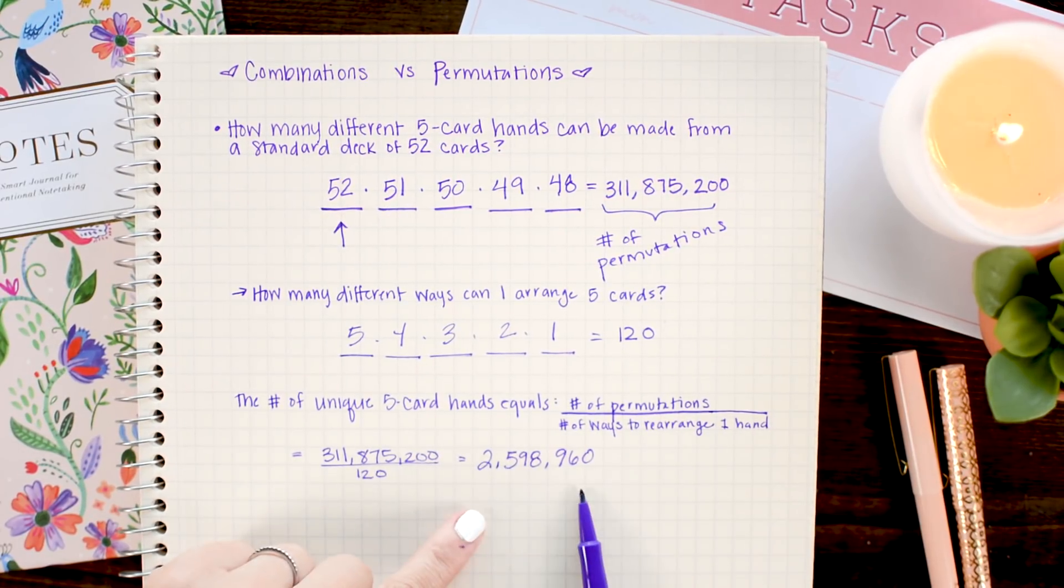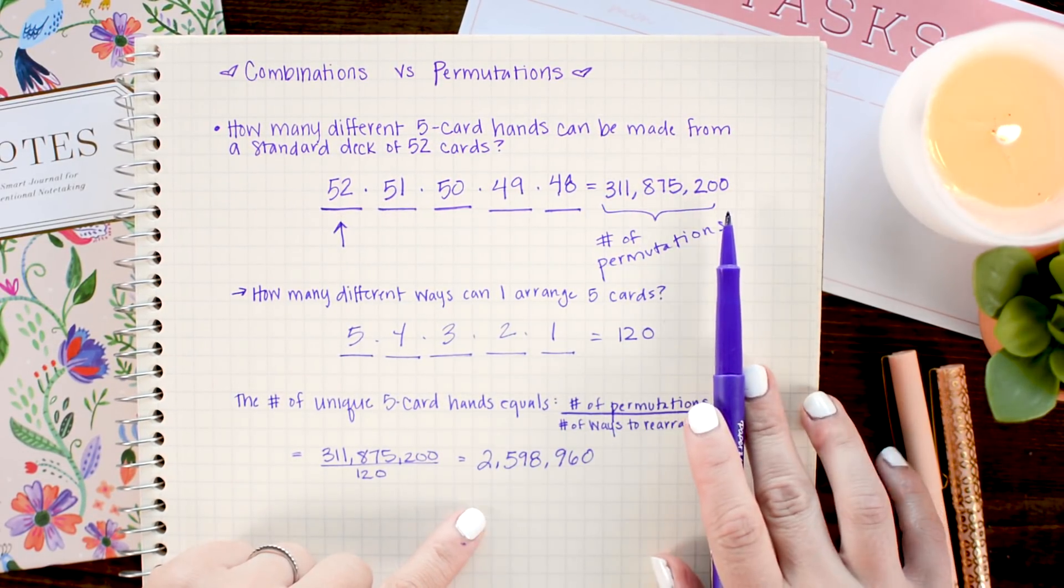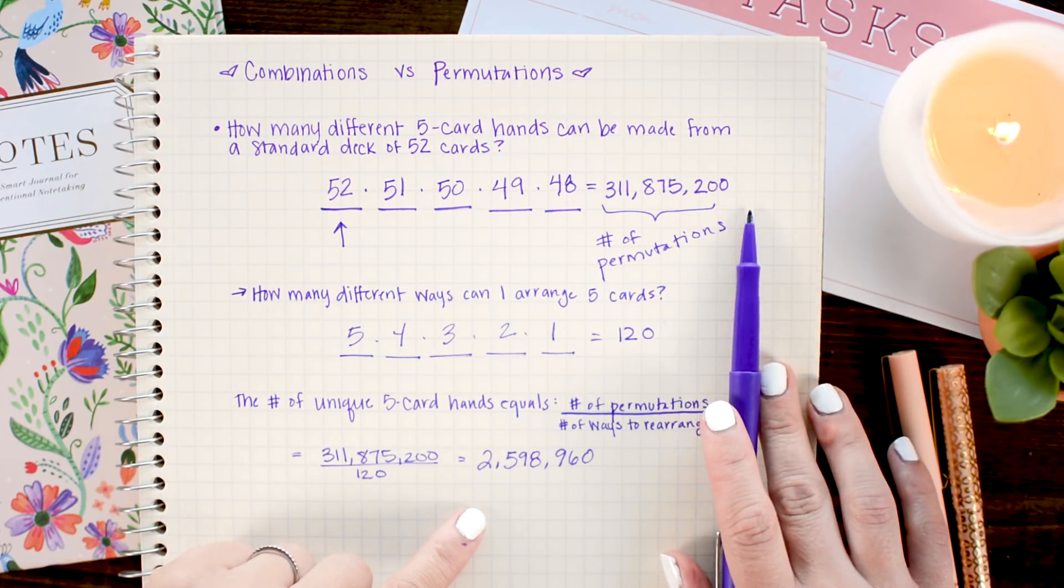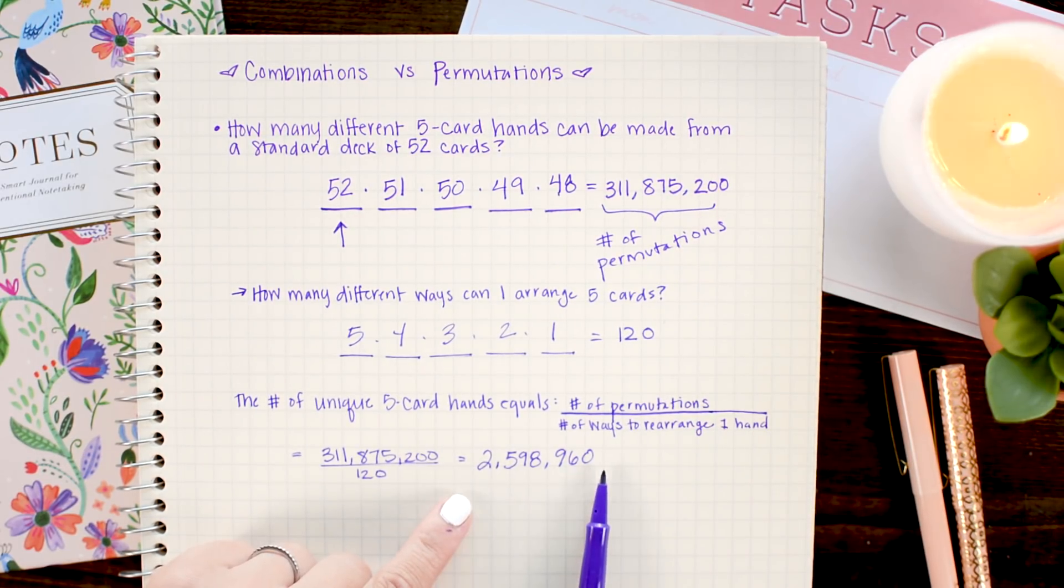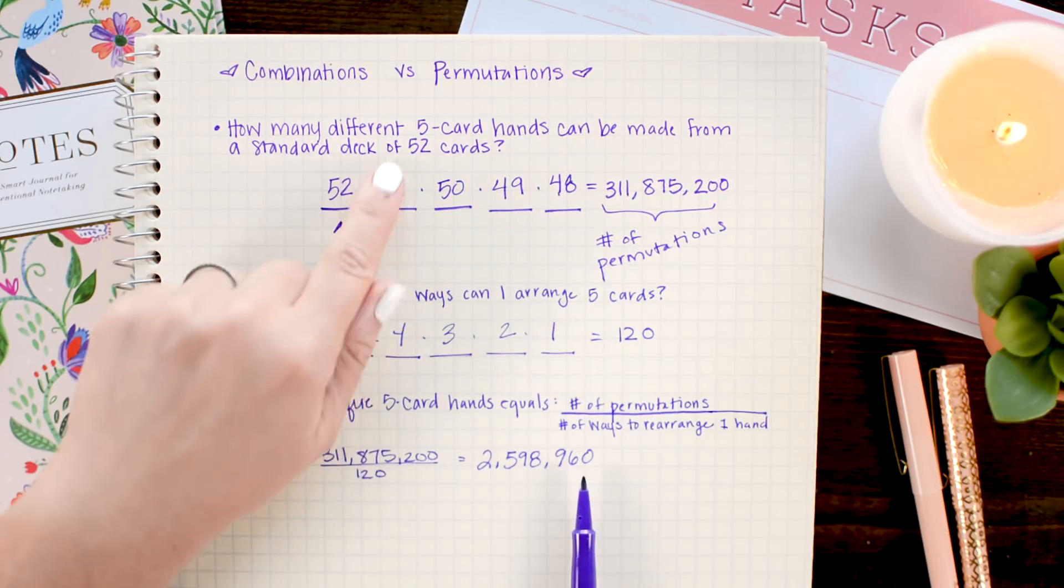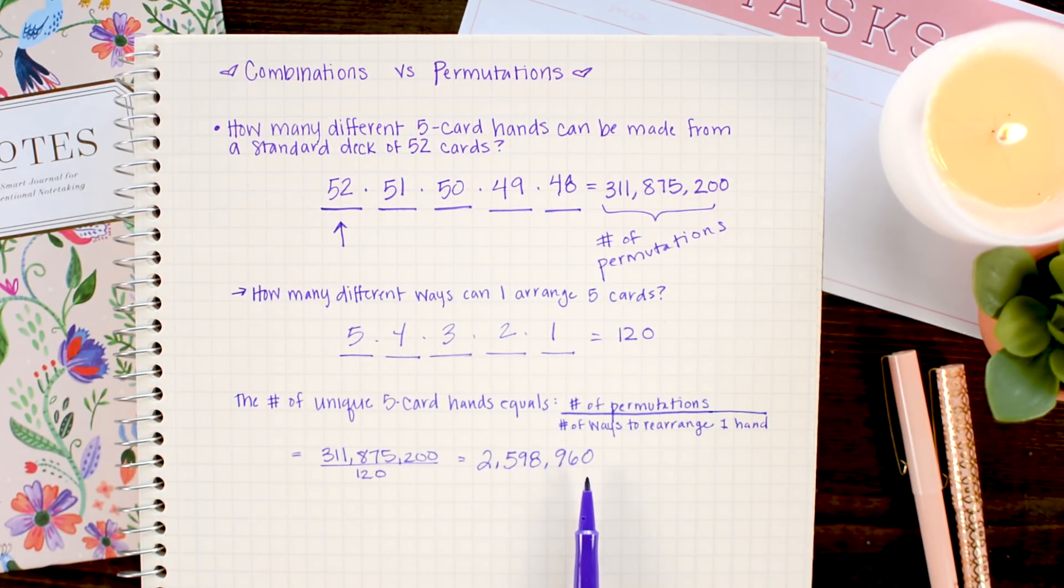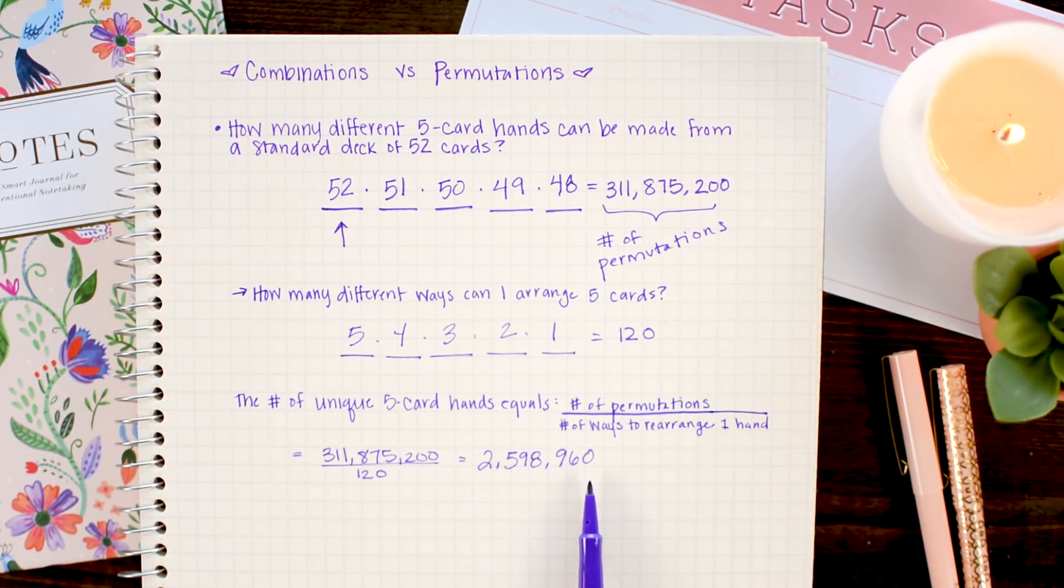All right. So, we still have a really large number, but it's not nearly as large as the number of permutations. So, the number of different combinations of five card hands from 52 card deck is 2,598,960.